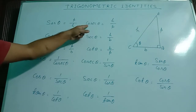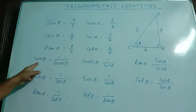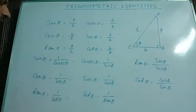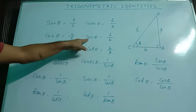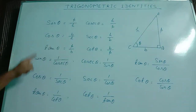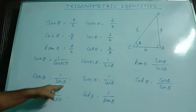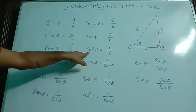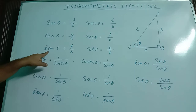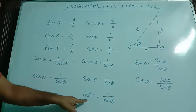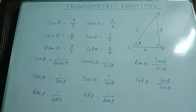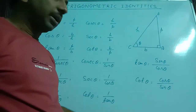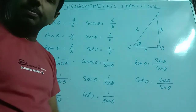Since cosec theta is the reciprocal of sin theta, therefore sin theta equal to 1 by cosec theta, or cosec theta equal to 1 by sin theta. Since sec theta is the reciprocal of cos theta, so cos theta equal to 1 by sec theta, or sec theta equal to 1 by cos theta. Since cot theta is the reciprocal of tan theta, therefore tan theta equal to 1 by cot theta, or cot theta equal to 1 by tan theta. Also, tan theta equal to sin theta by cos theta, and cot theta equal to cos theta by sin theta.